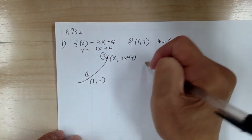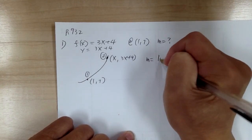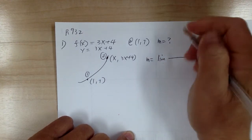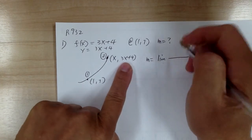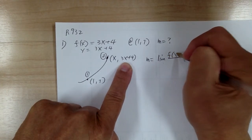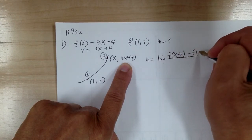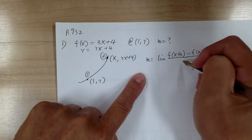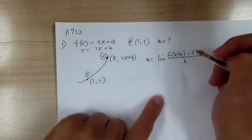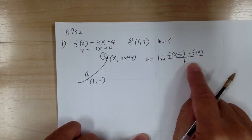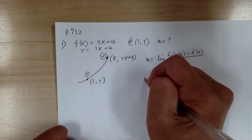The slope would be equal to the limit. So the limit of f of x plus h minus f of x, over h — that's one form. But the other form would be just based on the slope: y2 minus y1 over x2 minus x1.